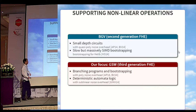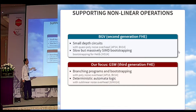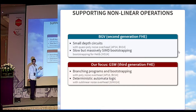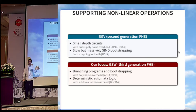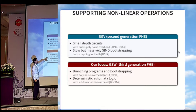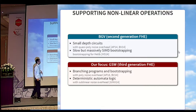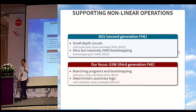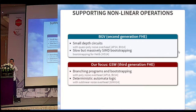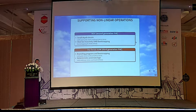We have linearity, but in order to get full homomorphism, we need to support non-linear operations. Based on LWE, there are two classical constructions: BGV and GSW. In our paper, our focus was more on the GSW side, which is known to support branching programs and bootstrapping, and also deterministic automata evaluation with polynomial noise overhead.